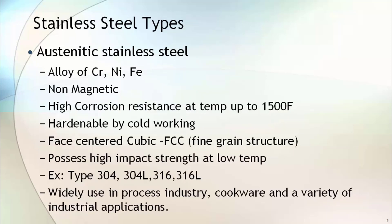Austenitic stainless steel is non-magnetic in nature and has very high corrosion resistance. These types are widely used in the process industry and a variety of other industrial applications. Even cookware is manufactured from austenitic stainless steel. Type 304, 304L, 316, and 316L are examples of austenitic stainless steel.